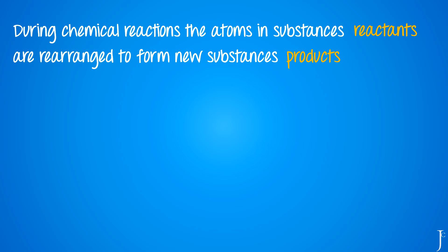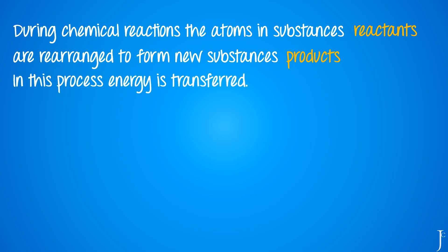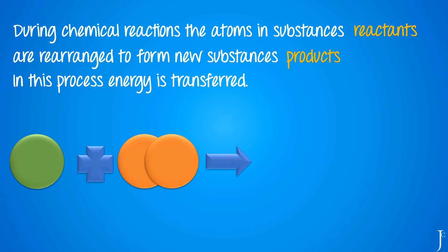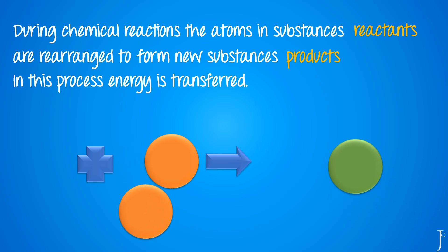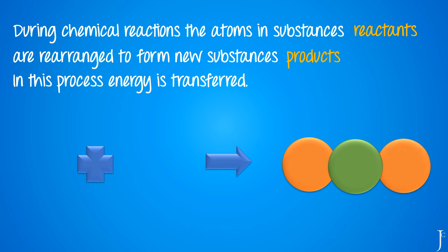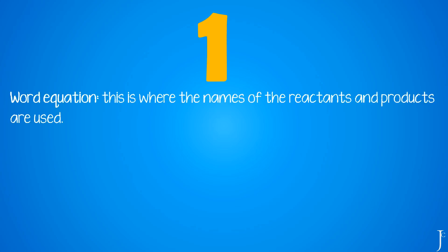During chemical reactions, the atoms in substances called reactants are rearranged to form new substances called products, and in this process energy is transferred. For example, magnesium reacting with oxygen through combustion or burning shows that the atoms on the reactant side are simply rearranged to form the new substance — the product — on the right hand side, which in this case is magnesium oxide.